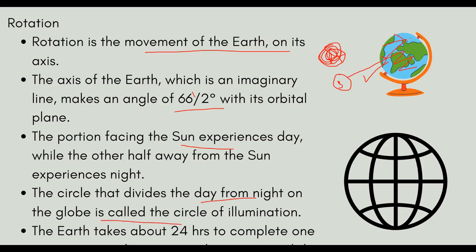The part facing the sun will have day, and the other part will be in shadow — it will be night. It is an imaginary line that separates day and night. That is called the circle of illumination.